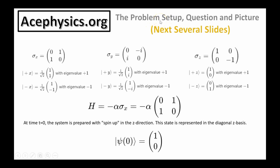On this slide and the next, I'll discuss the problem setup and the actual question I'm going to solve. On the following slides will be a picture to visualize this important problem. These are the three Pauli matrices, sigma x, sigma y, and sigma z, which are fundamental to understanding spin-1-half particles and the precession of spin-1-half particles in magnetic fields.